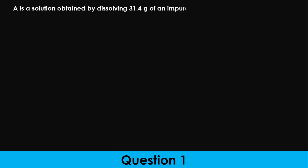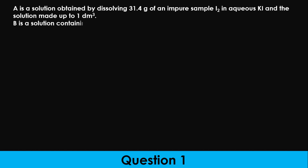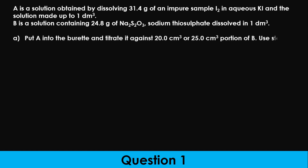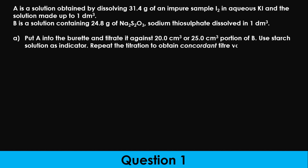Question 1. A is a solution obtained by dissolving 31.4 grams of an impure sample of iodine in aqueous potassium iodide, made up to 1 dm³. B is a solution containing 24.8 grams of sodium thiosulfate dissolved in 1 dm³. Put A into the burette and titrate it against 20 or 25 cm³ portions of B.